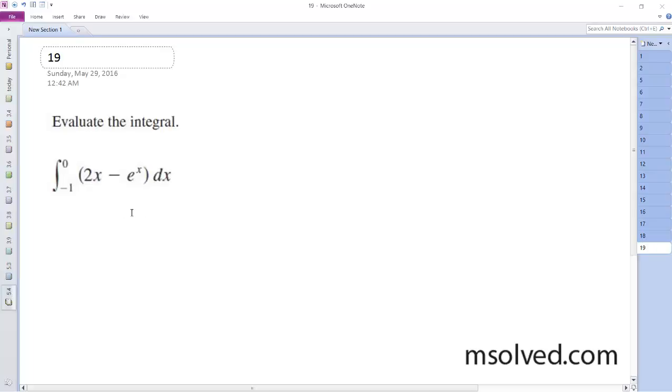I want to find the integral and evaluate it for the given points. So 2x minus e to the x.